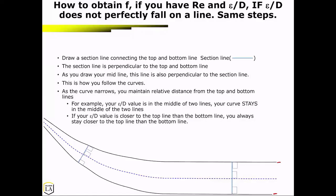So for example, if your relative roughness value is in the middle of two lines, your curve stays in the middle of the two lines. If your relative roughness value is closer to the top line than the bottom, you always stay about the same distance. So stay a little closer to the top line than the bottom.